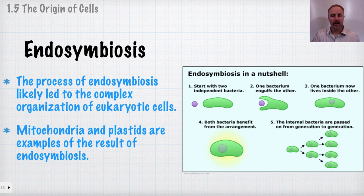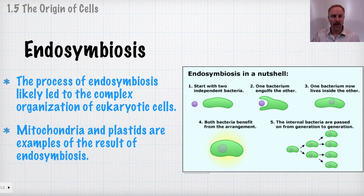Now turning to endosymbiosis — how cells increased in complexity after the first bacterial cells arose and lived for a couple of billion years. Endosymbiosis basically describes the increased complexity of these cells.